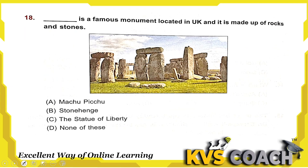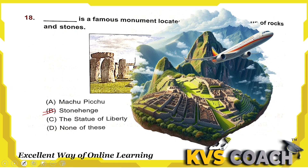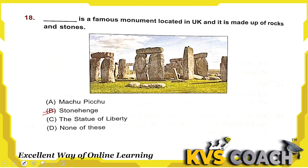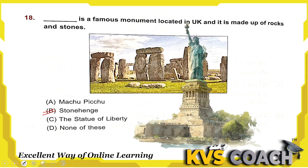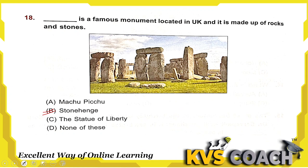Next question: a famous monument located in the UK is made up of rocks and stone — this is the picture of Stonehenge, so option B is the right answer. Machu Picchu is in Peru. The Statue of Liberty is in America. Option B, Stonehenge, is the right answer.